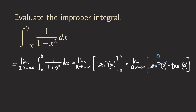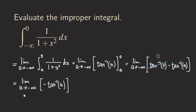Since tangent inverse of 0 is 0, we don't need to worry about that term. All we need is the negative tangent inverse of a, and we are taking the limit as a approaches negative infinity of negative tangent inverse of a.